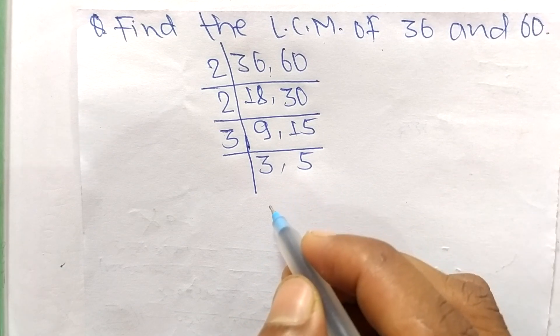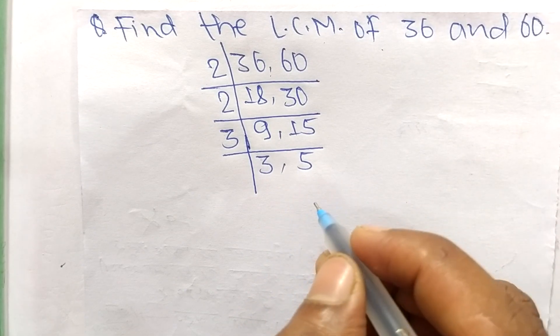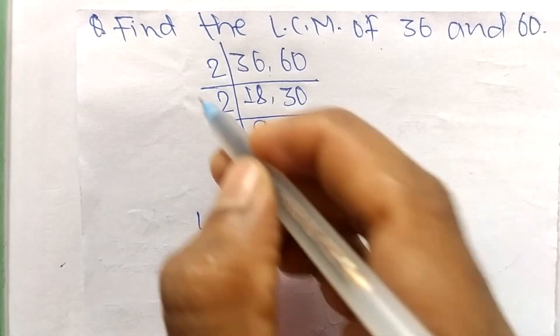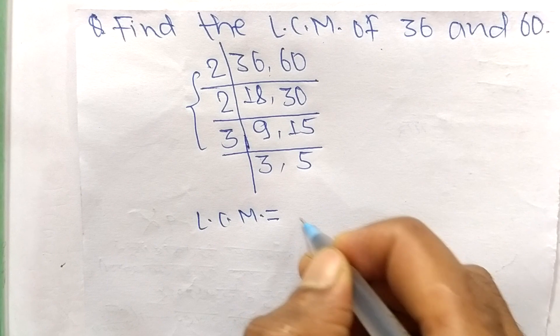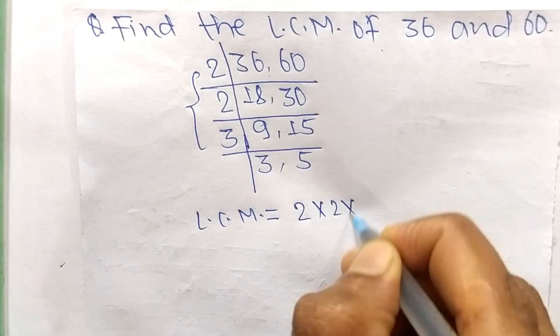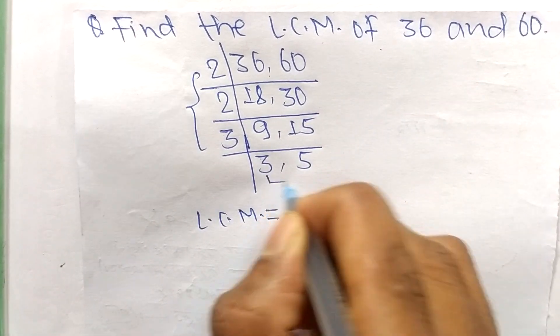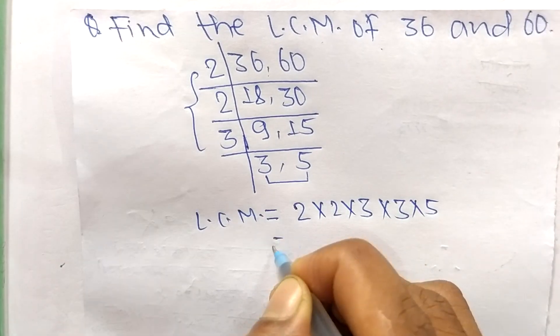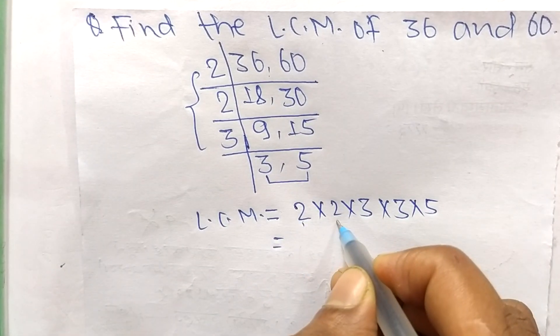So the LCM is equal to, from this part it is 2 times 2 times 3, and from this part we have 3 and 5. So 2 times 2 means 4, 4 times 3 means 12.